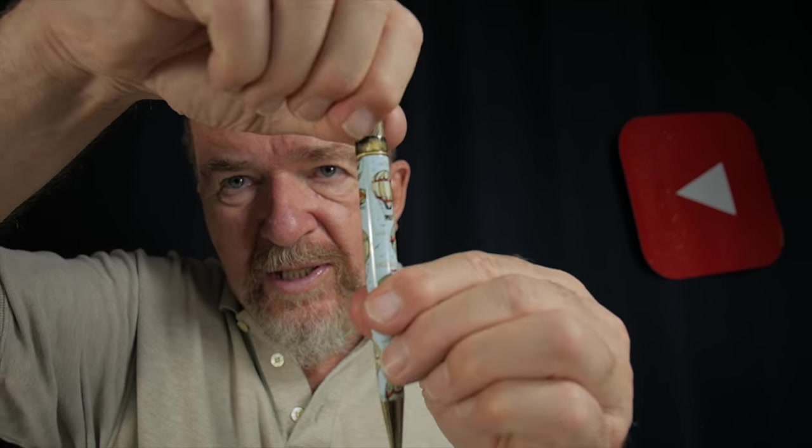This pen is a Retro 51 Tornado brand, and it's a French balloon motif pen. It's a really nice gel pen. And what's nice about it is it's a twist to actuate. So it's quiet, silent operation, twist to actuate. It has a nice clip on it, nice weight to it. It's not too big.